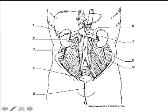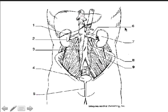Number two is the hilum of the kidney - the area of the kidney where the renal artery, vein, nerves, and lymphatics enter and where the ureter exits. Number three is the inferior vena cava. Number four is the urinary bladder. Number five is the urethra. Number six is the renal artery, coming right off the abdominal aorta. Number seven is the kidney - you've got one on each side. Notice that the right kidney is a little bit lower than the left because of the liver on top of it. Number eight is the abdominal aorta, and number nine is the ureter, one on each side.